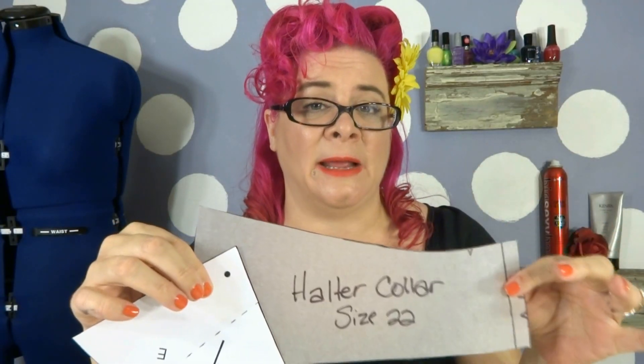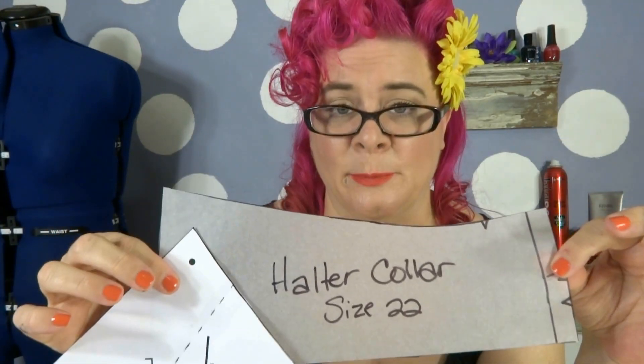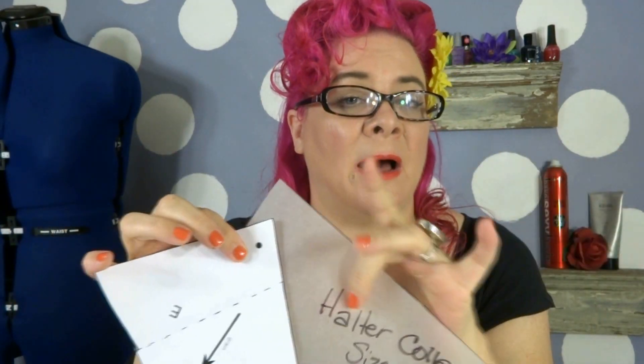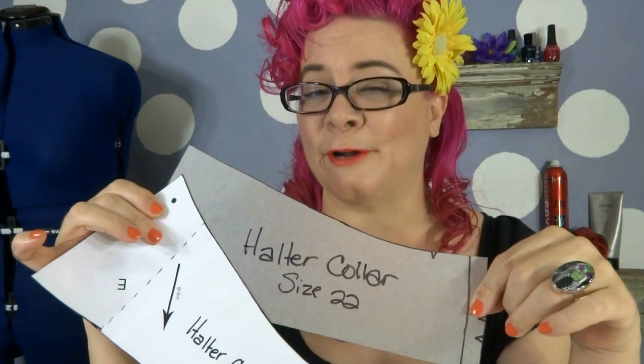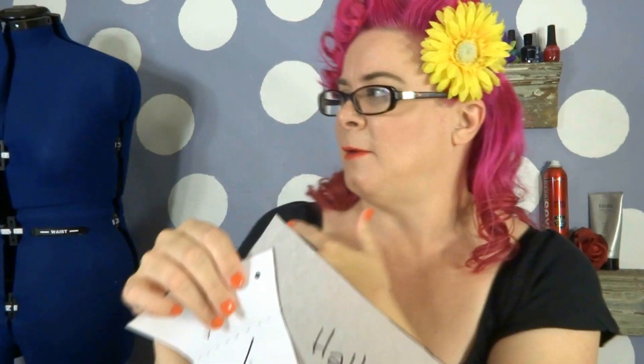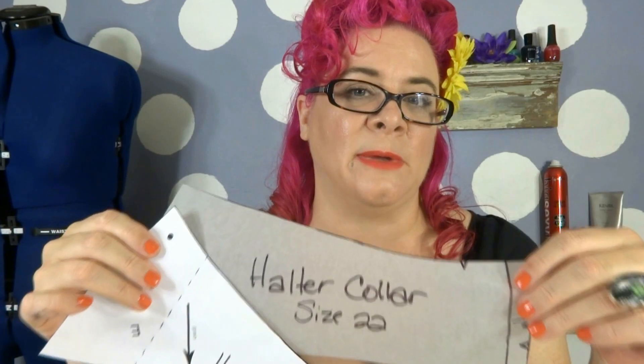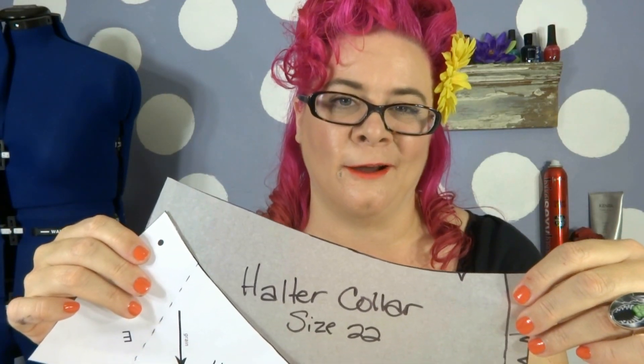So what I'm going to do now is I'm going to be cutting out two of each of these pattern pieces. You can choose to cut your pattern pieces all out on whatever pattern paper you choose, or you can use muslin. I'll be covering in next week's video how to take those pieces and tack them together and put them either on you or on a mannequin if you have one like Marilyn back there and actually see how that is going to fit so that we can make any changes before making that final cut on our fabric pieces.